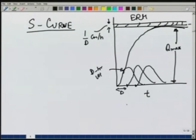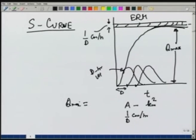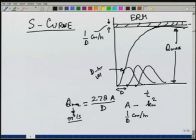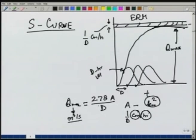If we have a catchment area A in km² and rainfall intensity 1/D cm/hr, then q_max = 2.78·A/D m³/s, where we have accounted for unit conversions: 1/3600 for per-hour to per-second, 10⁶ for km² to m², and 0.01 for cm to m. Once we get the S-curve, we shift it by an amount Δt. The difference ΔS between the original S-curve and the shifted one represents the direct runoff due to a rainfall of duration Δt and intensity 1/D.